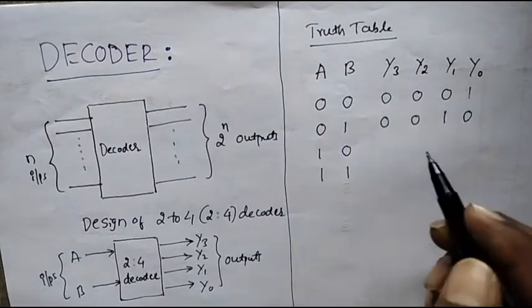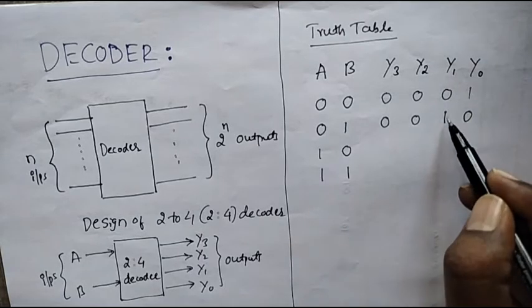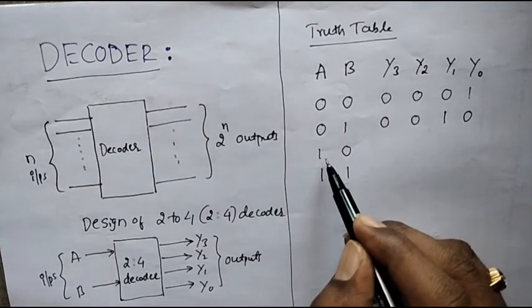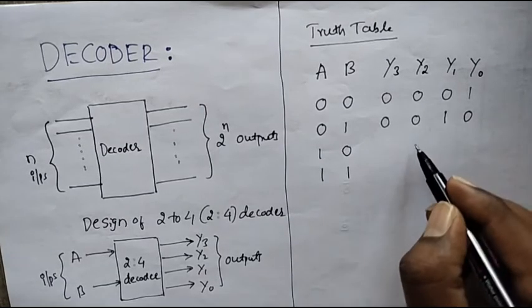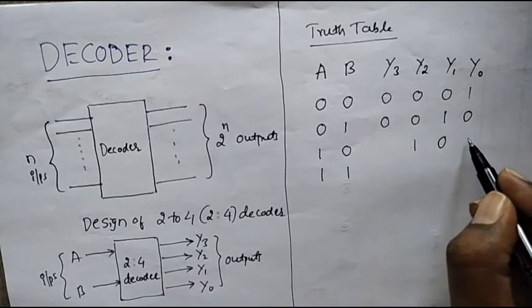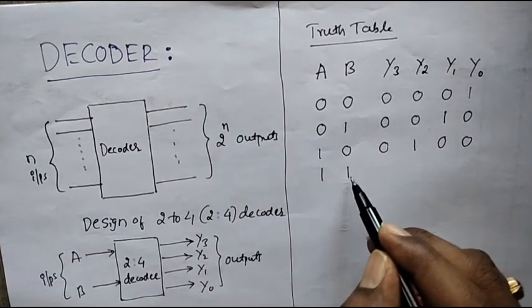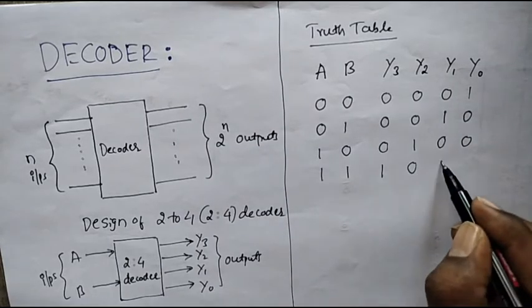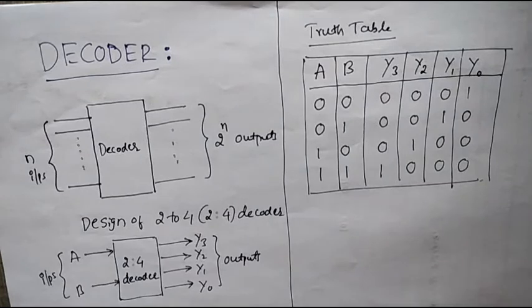Similarly, when input is 0,1, it will make the Y1 line high; when input is 1,0, it will make the Y2 line high; and when both inputs are 1, it will make the Y3 line high, with the remaining outputs being 0 in each case. This is the truth table of the 2-to-4 decoder.